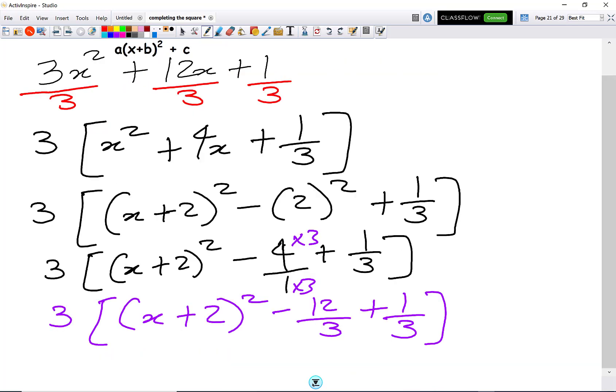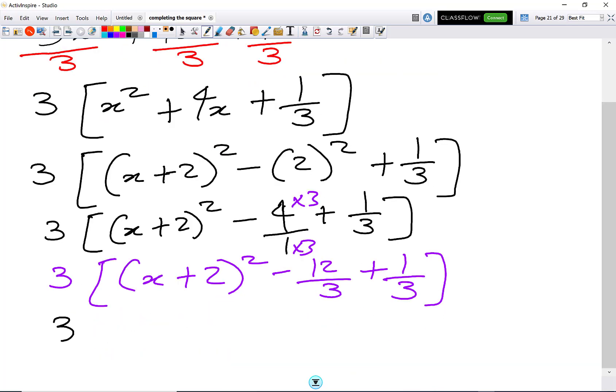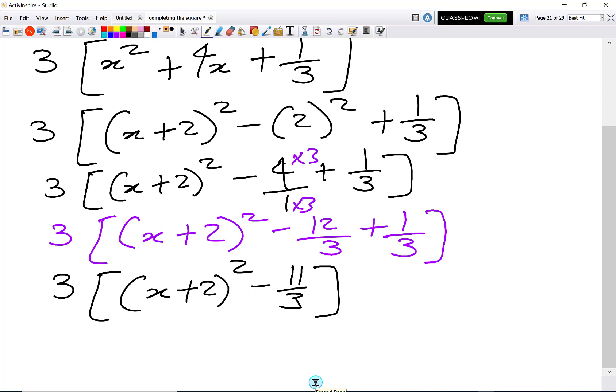Now this will give me 3(x + 2)² minus 12 plus 1 is minus 11 over 3. And I can expand the brackets out here. So I get 3(x + 2)² - 11/3 times 3 is 11. So there we have it, I've completed the square.